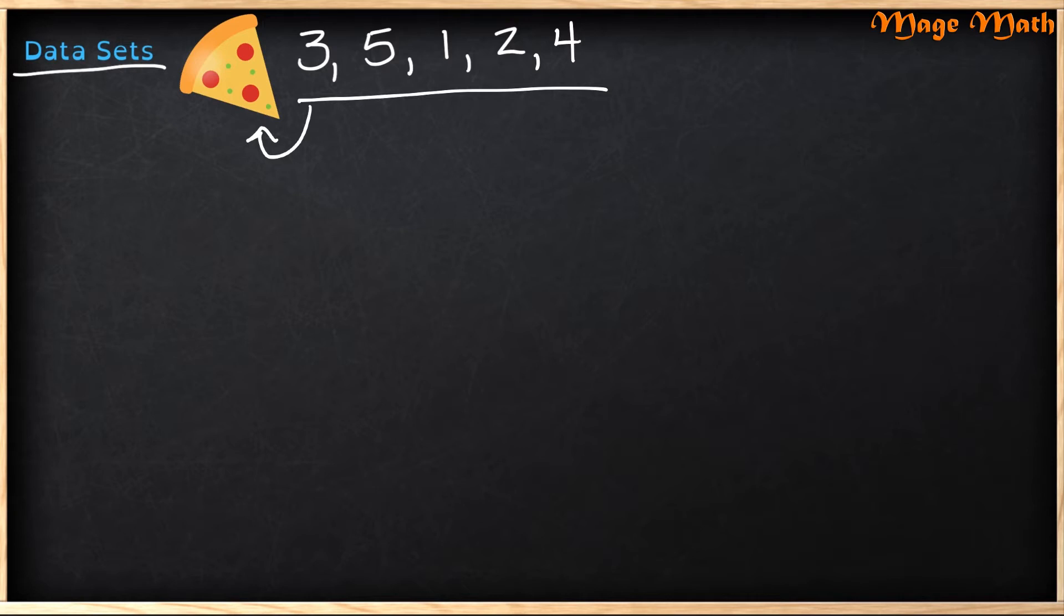Next, we need to look at different parts of a data set. The first part we're going to learn about is called the mean. The mean is just a fancy way of saying finding the average. Do you know how to find the average? If you said add and then divide, you are correct.